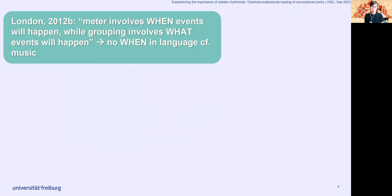London wrote that meter involves when events will happen while grouping involves what events will happen and claimed there's no when in language compared with music. However, conventional poetry is characterized by the composed sequence of syllables and their respective phonetic quality, thus allowing for at least some degree of timing.